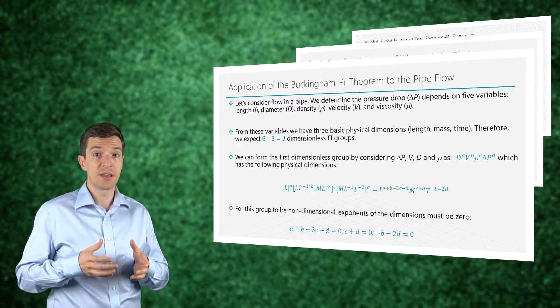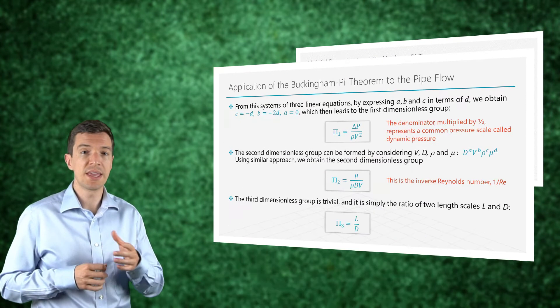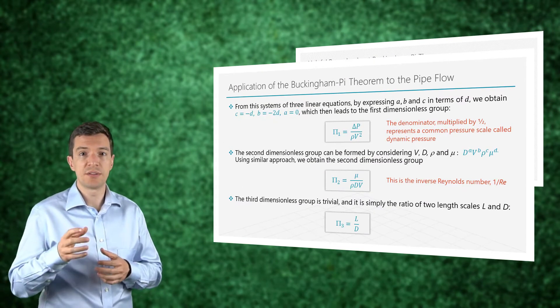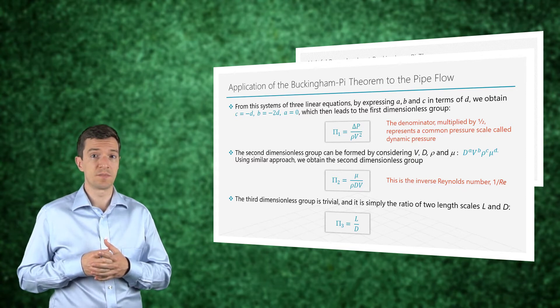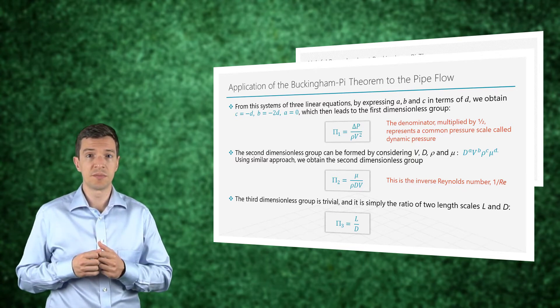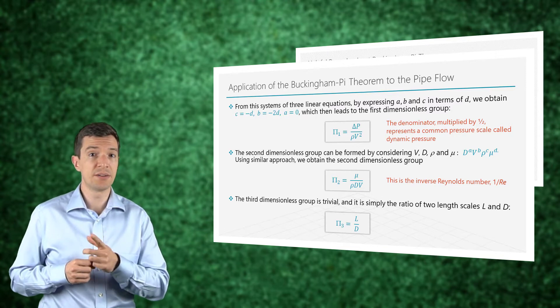In this way, we can set the three exponent expressions equal to zero, and we derive this final condition, where a is equal to zero, c is equal to minus d, and b is equal to minus 2d.